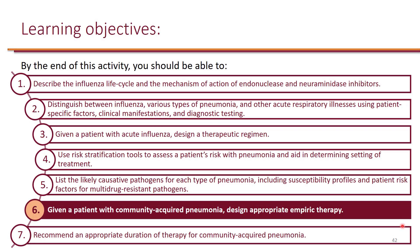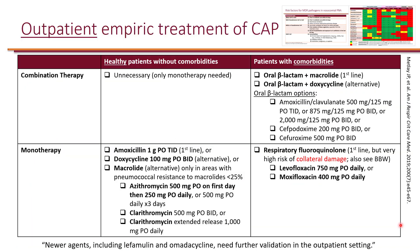We have looked at different types of pneumonia, used different risk stratification tools to assess patients' risk and aid in determining setting of treatment, and looked at causative pathogens for different types of pneumonia. Now, given a patient with community-acquired pneumonia, design appropriate empiric therapy. Here are the recommendations from the 2019 IDSA guidelines for CAP. When it comes to treatment of CAP, you need to consider those patients who need to be treated as outpatient and those who need to be treated as inpatient.